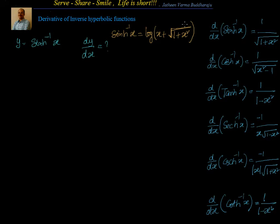Let us start with sinh⁻¹(x). We know sinh⁻¹(x) is equal to log of x plus square root of 1 plus x square. We can find out the derivative in two ways. Let us look at both options. First, we will do it by taking x equal to sinh(y). Next, we will use the original definition of sinh⁻¹ according to log of x plus square root of 1 plus x square.